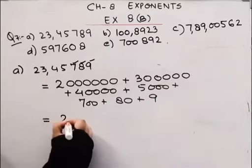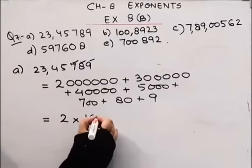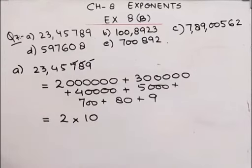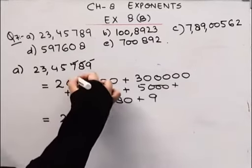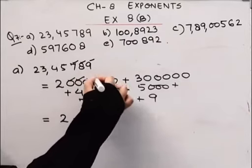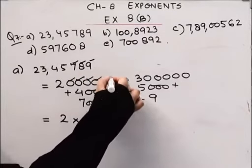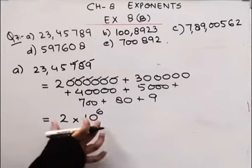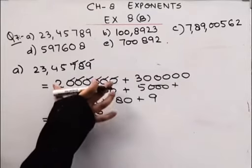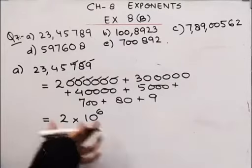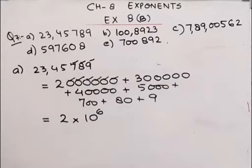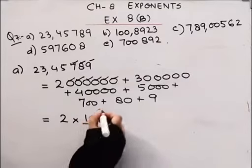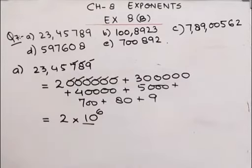Now, 2 can be written as 10 raised to the power — how many zeros? 1, 2, 3, 4, 5, 6. So I'll write it as 2 into 10 raised to the power 6. This gives the same result. I have written this in exponential form — one base, one power. Clear?